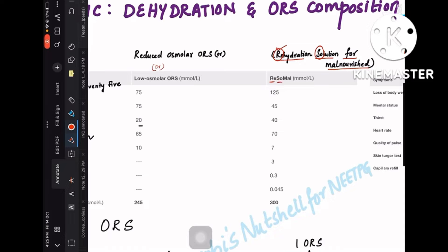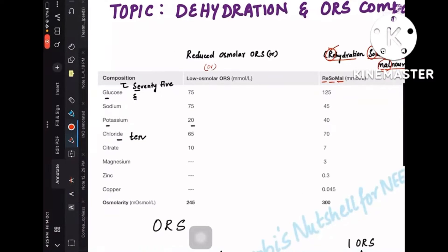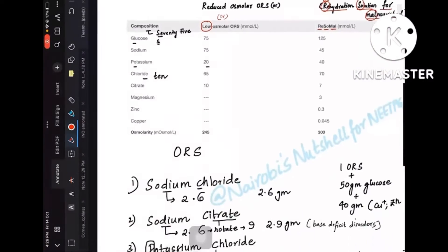The second one is rehydration solution for malnourished patients. ReSoMal is the rehydration solution for malnourished, whereas reduced osmolar or low osmolar is one and the same—that is the normal ORS which is now very commonly used.